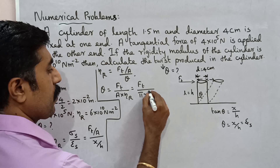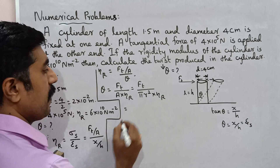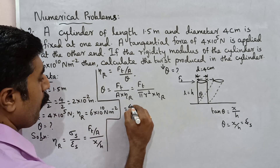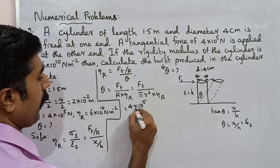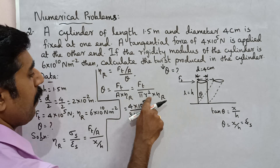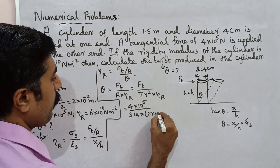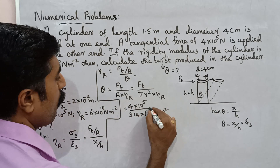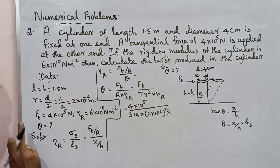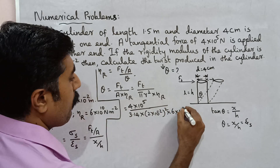So substituting: theta equals F_T divided by pi r squared into eta r. That is 4 into 10 power 5 divided by 3.14 into radius 2 into 10 power minus 2 whole squared into eta — 6 into 10 power 10.